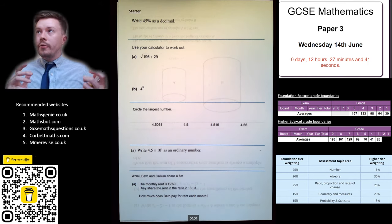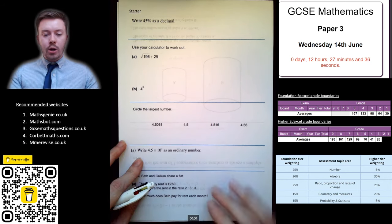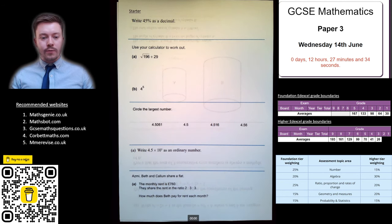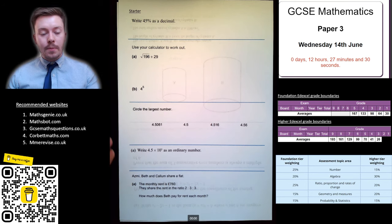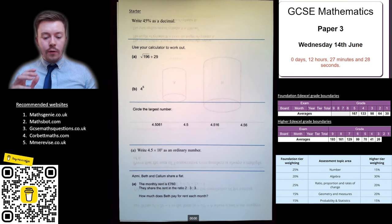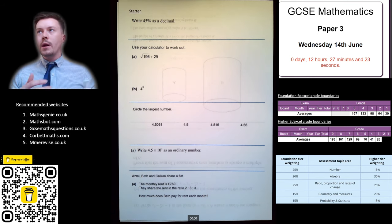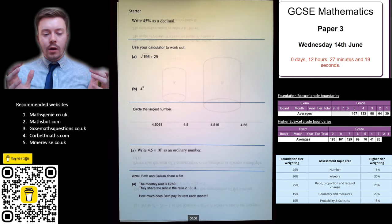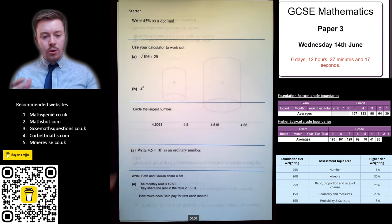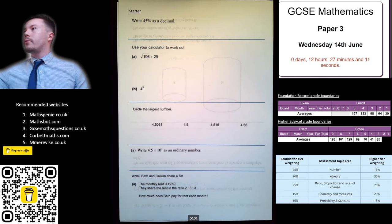So the first thing we're going to look at is writing 45% as a decimal. We're going to go through these starter questions first. These questions are from the start of the paper — I've chosen them from foundation papers and higher papers, a bit of a mix. Have a look through and see what you can do. You've obviously got your calculator, so use it.